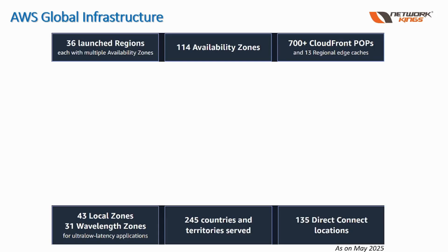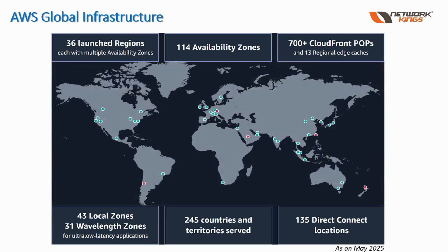AWS global infrastructure — AWS is known for its rich and vast global infrastructure. AWS has over 36 launched regions, 114 plus availability zones, 700 plus edge locations, 43 local zones, 31 wavelength zones, and 135 Direct Connect locations across the globe.